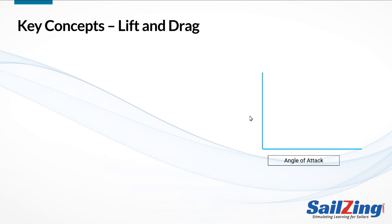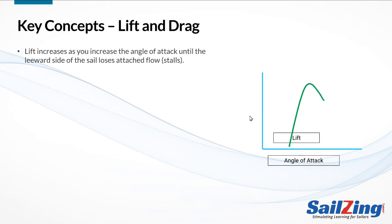First, we'll show how lift changes as you increase your angle of attack. In the left portion of the graph, you're heading into the wind — your sail is luffing and you have no lift. As you bear off and pull in your sail, the sail starts to fill and you begin to get lift. As you continue to bear off, more of the sail fills and lift increases. If you keep bearing off, the leeward side of the sail will stall and lift decreases.